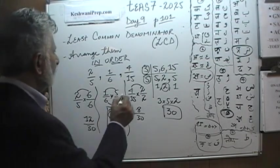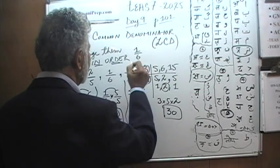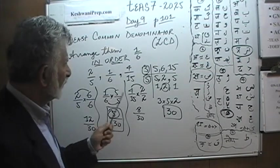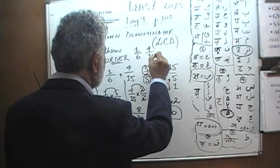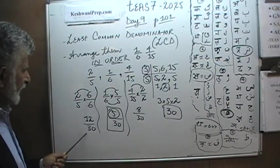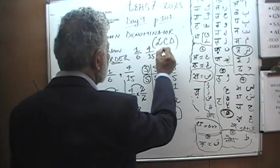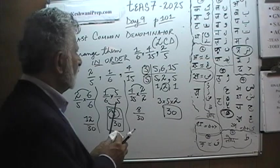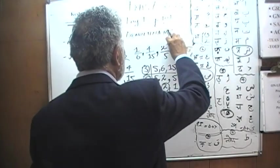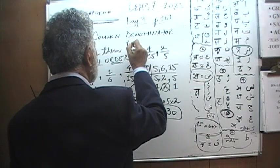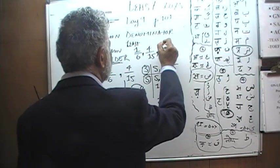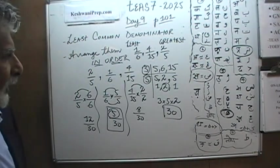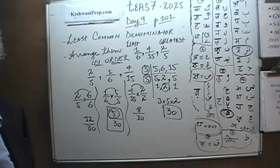Then we have 8. That's the next one. 8/30 came from 4/15. And finally, 12/30 came from 2/5. There we go. We have arranged them. We have arranged them from least to greatest. This is the least, and this is the greatest. And that guy goes in the middle. Now they are arranged in order.